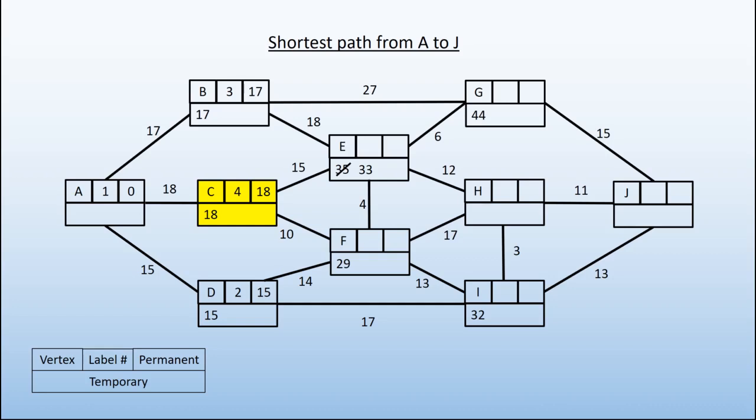Similarly, for C to F, 18 plus 10 is 28, so we can get there in a shorter distance as well. C is now complete.